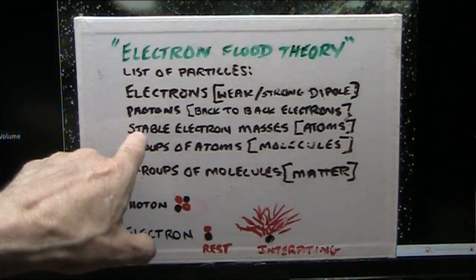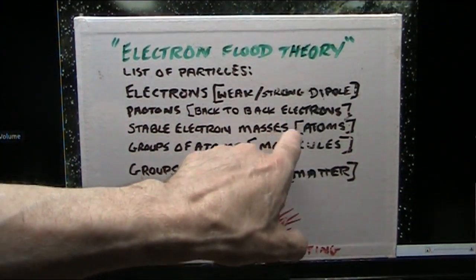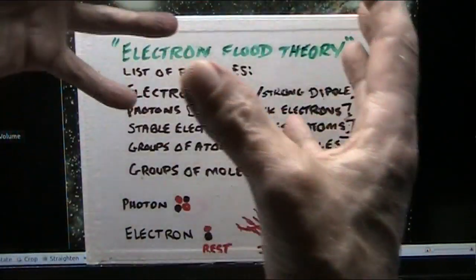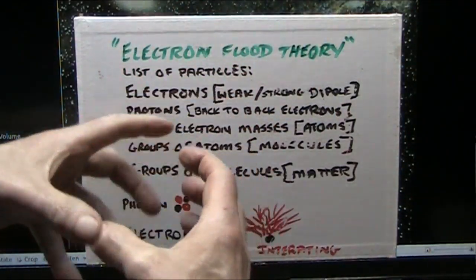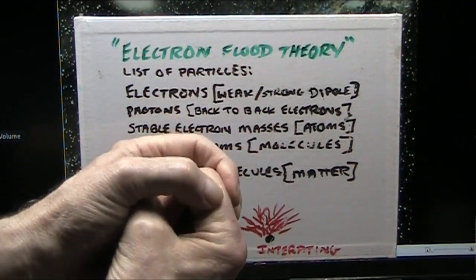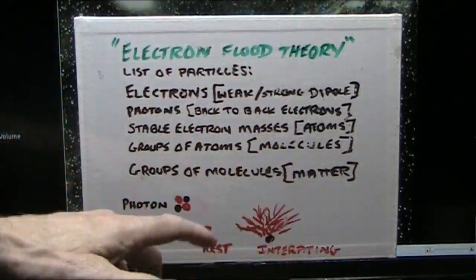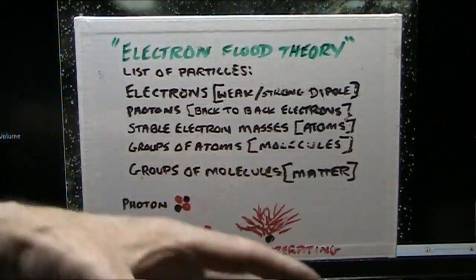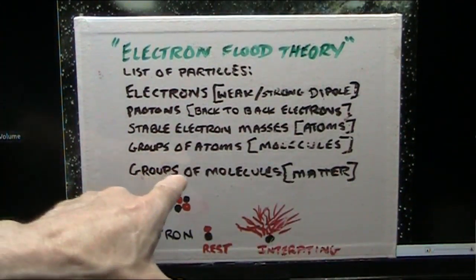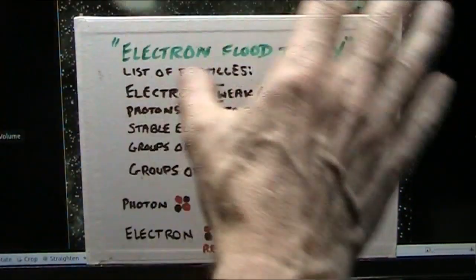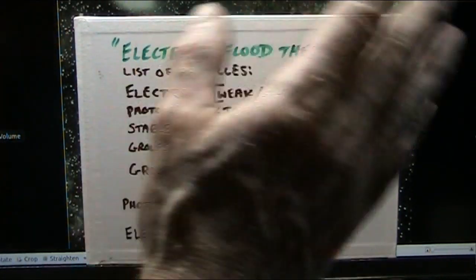Photons are back to back electrons. Stable electron masses are atoms. They're chunks of all of these electrons in resonance stability. Groups of atoms are molecules, bunches of them. Groups of molecules are what we call matter, tables and chairs and things.